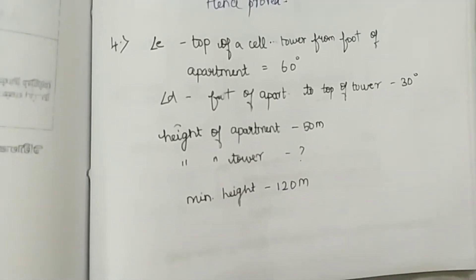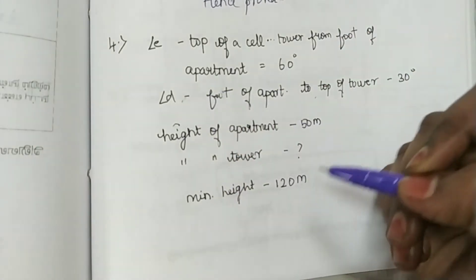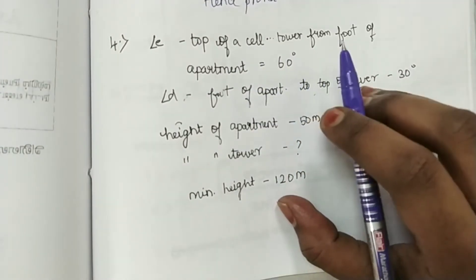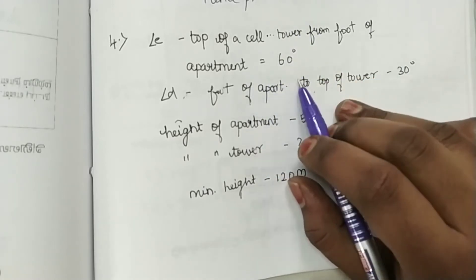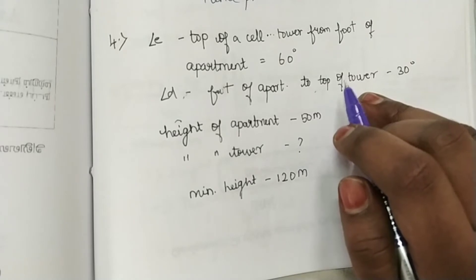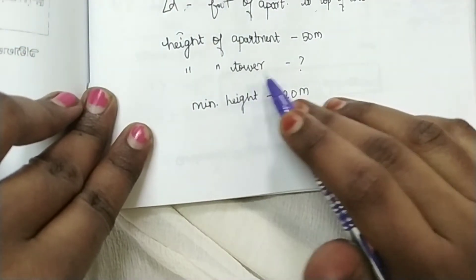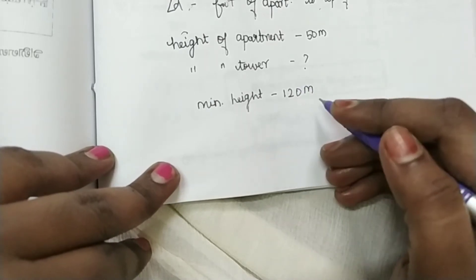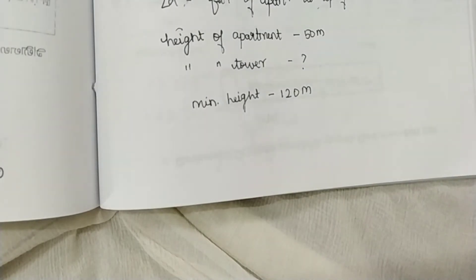In this video, we will cover XI's Exercise 6.4, the last three sums. The angle of elevation from the foot of the apartment to the top of the cell tower is 60 degrees, and the angle of depression from the top of the tower to the foot of the apartment is 30 degrees. The height of the apartment is 50 meters, and we need to find the height of the tower — which comes out to 120 meters.